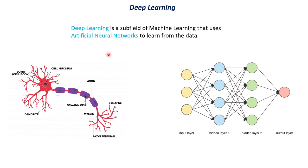Deep learning is a subfield of machine learning that uses artificial neural networks to learn from data. We have several models like logistic regression, support vector machines, etc. When we use those models to learn from data we call that machine learning. But when we use artificial neural networks, we call that deep learning. This is also shown in the diagrammatic representation of an artificial neural network.